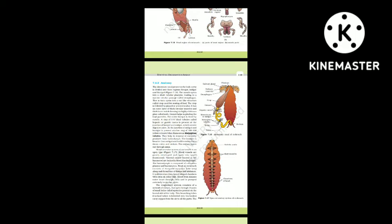The hindgut is broader than the midgut and is differentiated into ileum, colon and rectum. The rectum opens out through the anus. The blood vascular system of cockroach is of open type. Blood vessels are poorly developed and open into spaces (hemocoel); visceral organs located in the hemocoel are bathed in blood (hemolymph). The hemolymph is composed of colorless plasma and hemocytes. The heart of cockroach consists of an elongated muscular tube lying along the mid-dorsal line of the thorax and abdomen, differentiated into funnel-shaped chambers with ostia on either side.